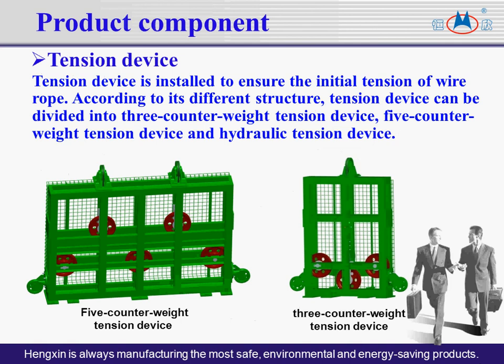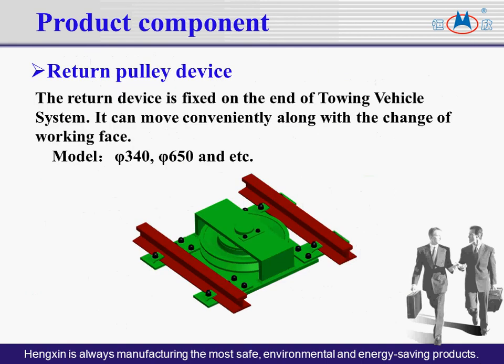The towing vehicle system must be equipped with a tension device to ensure the initial tensioning force of the wire ropes. According to structure, tension devices are divided into three counterweight tension device, five counterweight tension device, and hydraulic tension device. The return device is fixed at the end of the towing vehicle system to support the reaction force of the whole system, and it can move conveniently with the change of working phase. The return pulley is divided into two diameters: diameter 240 and diameter 650, according to the arrangement form of wire ropes.